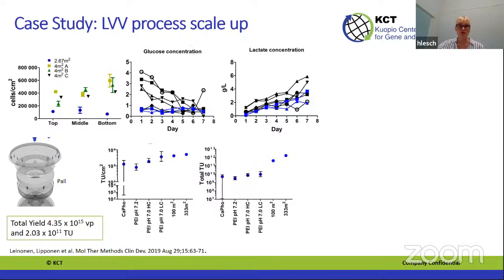The first scale-up used ICELIS 500 with a 100 square meter run, followed by a second run with a 333 square meter bioreactor. Productivity was good — even better than at small scale — and we ended up with a final yield of 4×10^15 viral particles.